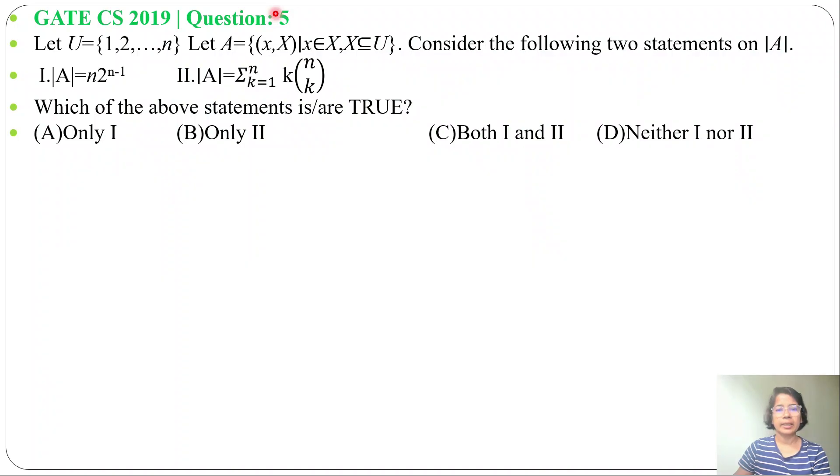Let's solve one previous question of set theory. This question was asked in GATE CS 2019, question number 5. Let U equals 1, 2 till n. Let A equals ordered pair (x, X) such that x belongs to X and X is a subset of U. Consider the following two statements on cardinality. Two statements are given, which of them is or are true, and four options are given.